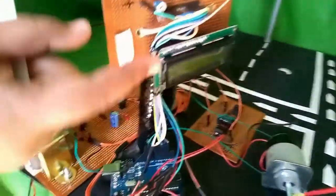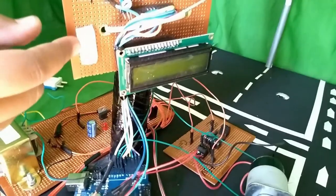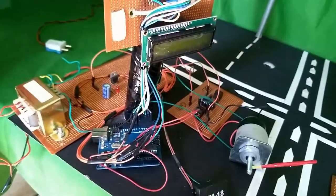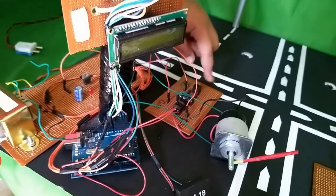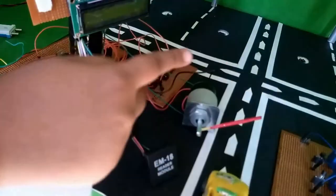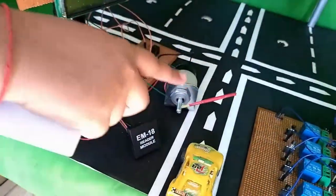The deducted amount and the remaining balance will be displayed. Then afterwards the RD node will send the signal to the motor driver circuit. The motor driver circuit will rotate the motor and thus the gate will open, and after few seconds it will get closed.